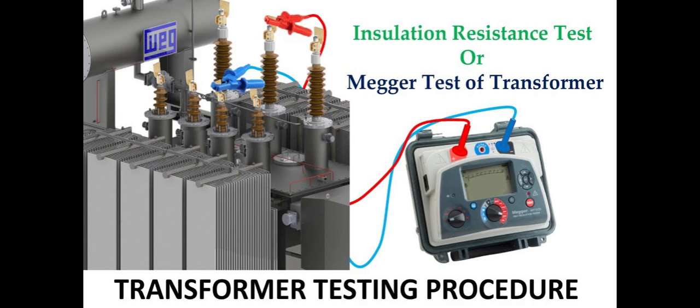5. Short Circuit Test. Purpose: to determine the transformer's impedance and losses under short-circuit conditions. Procedure: apply a reduced voltage to the primary winding with the secondary winding short-circuited and measure the primary current and power loss.